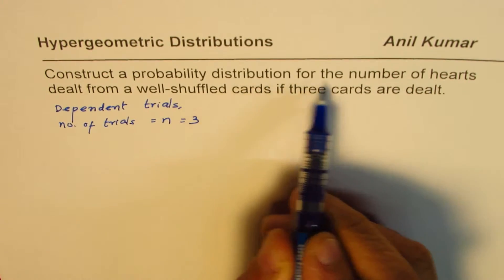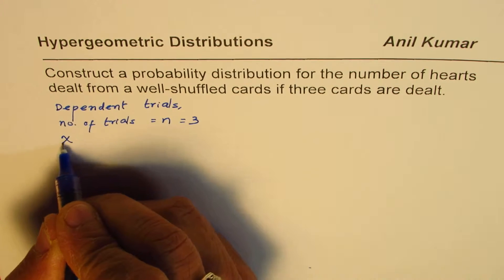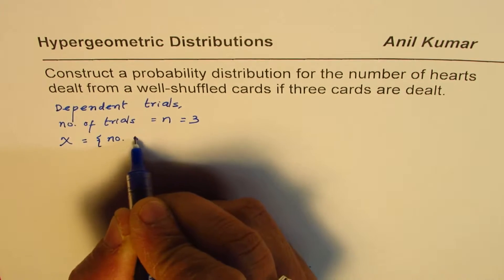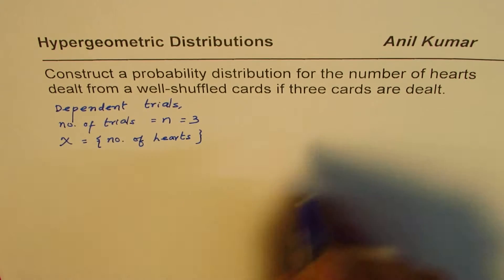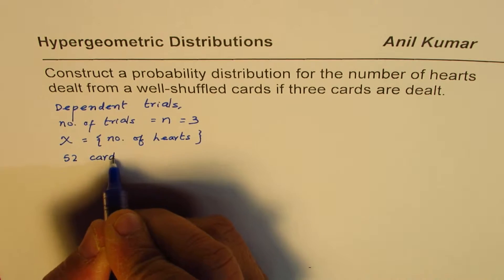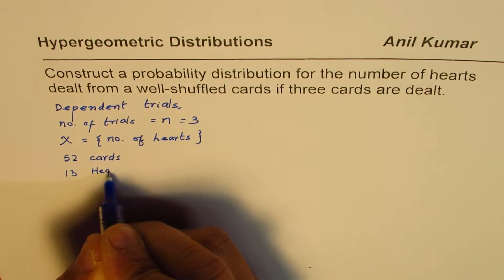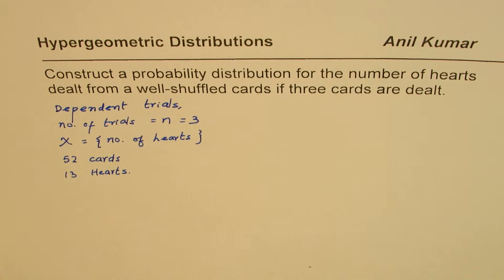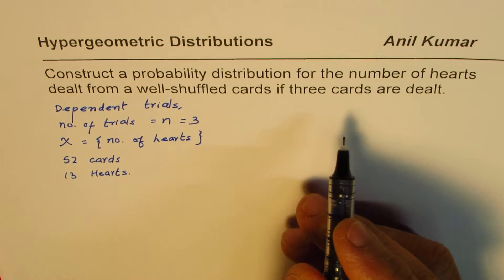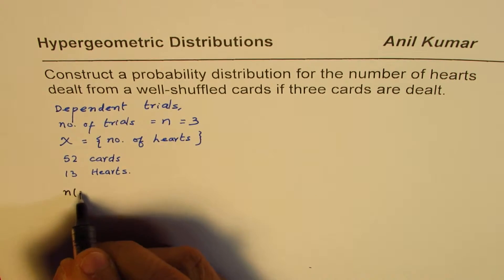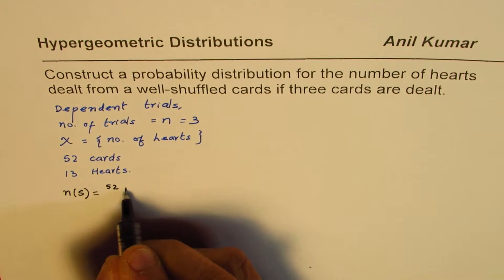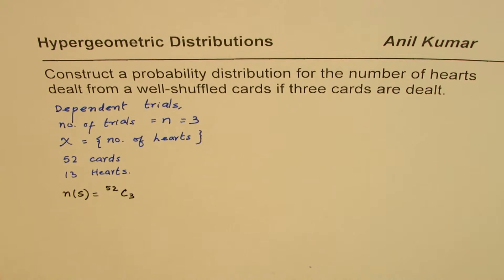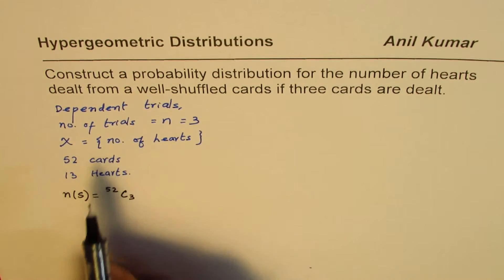Since we are interested in the distribution of the number of hearts dealt, the random variable x equals the number of hearts. In a standard deck of cards we have 52 cards, out of which 13 are hearts. If we are dealing 3 cards, the total number of combinations — the sample space — is 52C3, which is the denominator part of our probability.